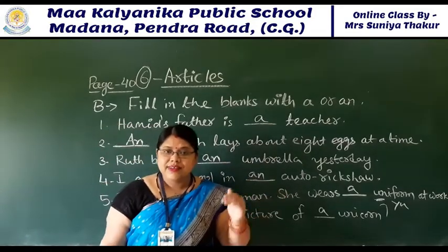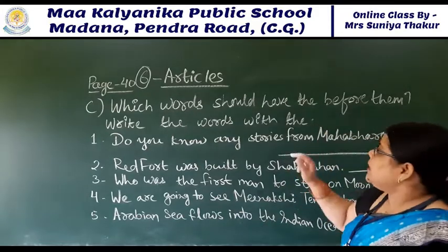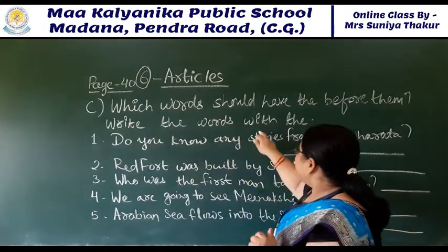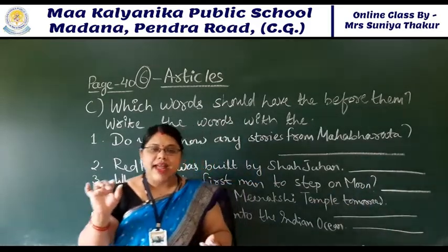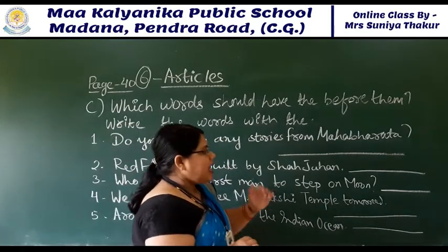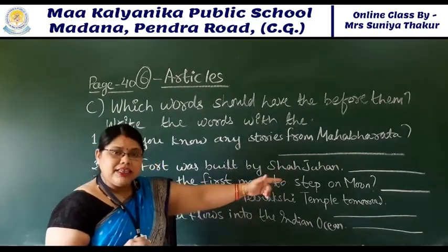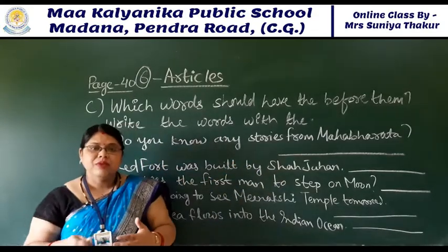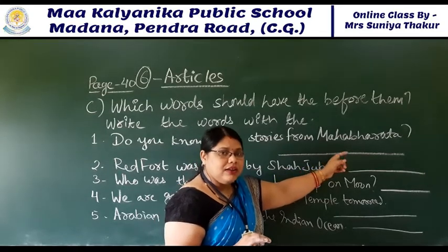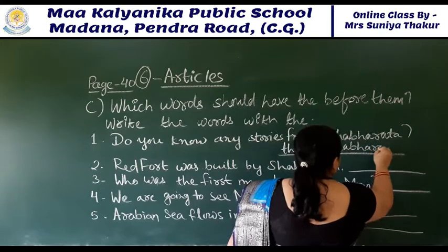Now look at the next number. In this number, it asks which words should have 'the' before them - write the words with 'the'. In which word we should use 'the', we will write it in the blank. Do you know any stories from the Mahabharata? Here 'the Mahabharata' is needed - for particular well-known books and scriptures we use 'the'. So we will write: the Mahabharata.